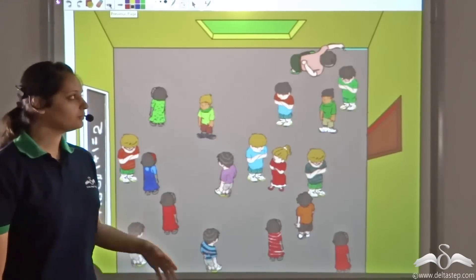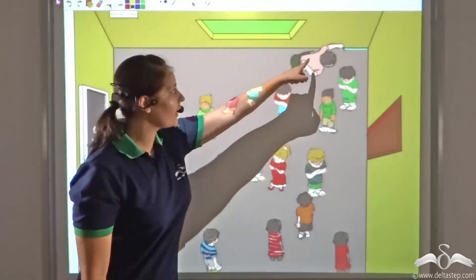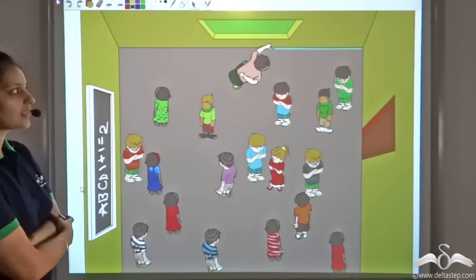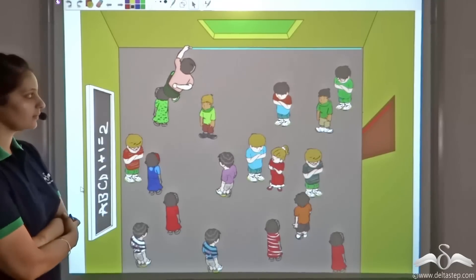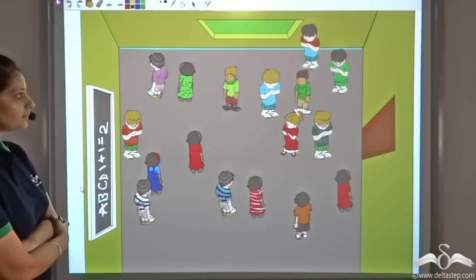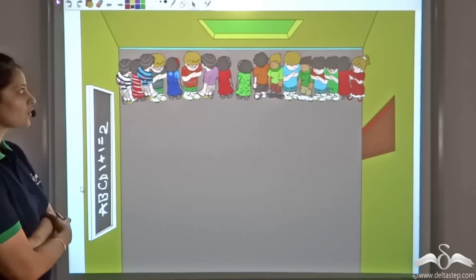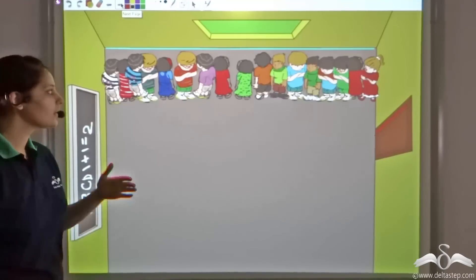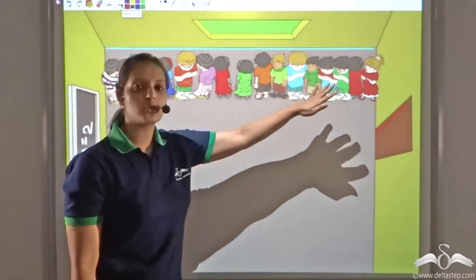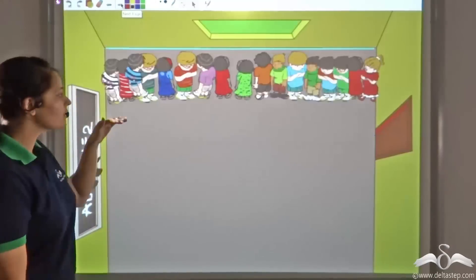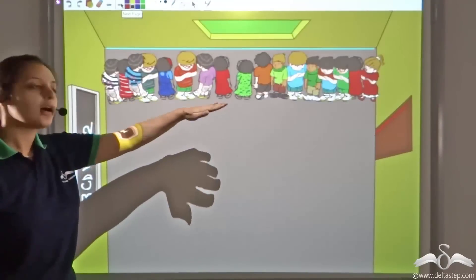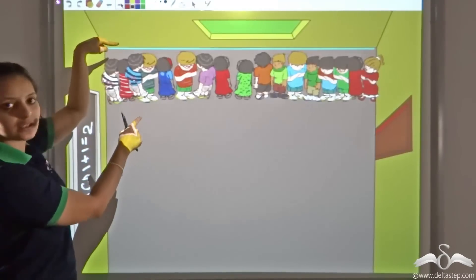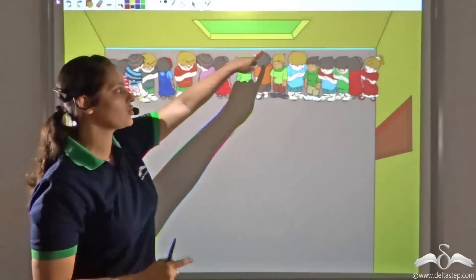Let us look at this classroom. The teacher draws a line on the floor using chalk and asks all the students to stand three feet away from this line. Let us observe what happens. So the students end up forming a line. Now why does that happen? You can consider all these students as points. So this is a collection of points, and all these points are satisfying one condition: they are standing three feet away from this line which is there on the floor.